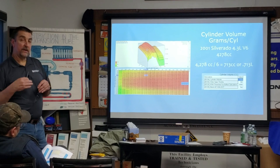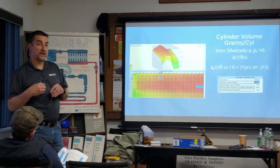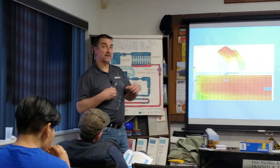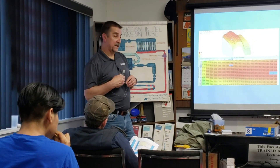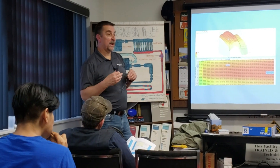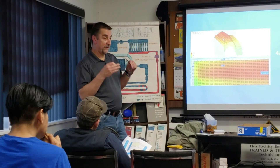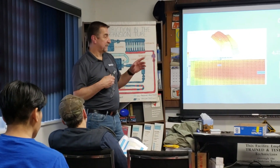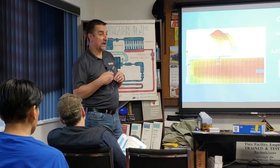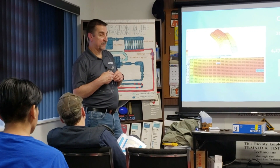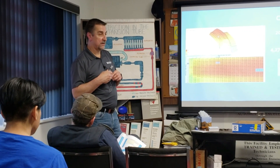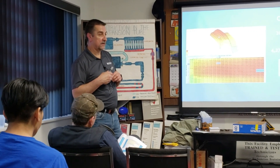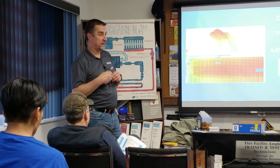So if you've got a GM car that uses dynamic airflow — which is what this is called — and it's got a fuel trim-related problem and you're focusing on the mass air meter, you need to be looking at MAP sensor-related issues: vacuum leaks, maybe something going on there.